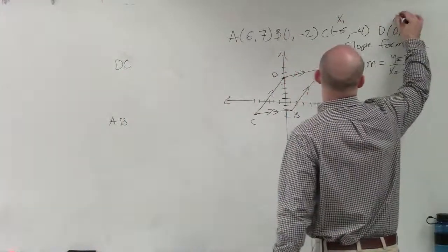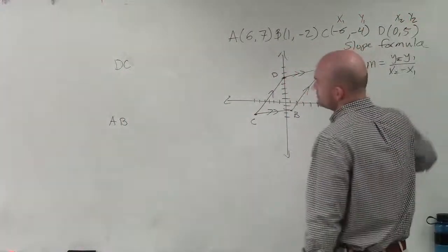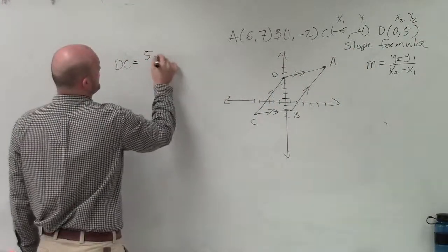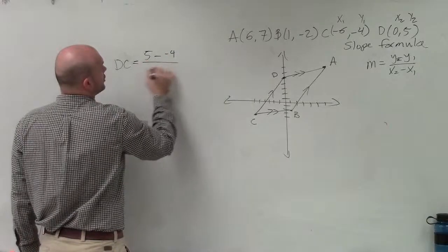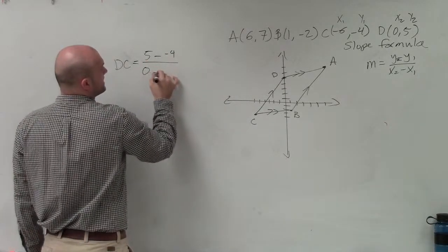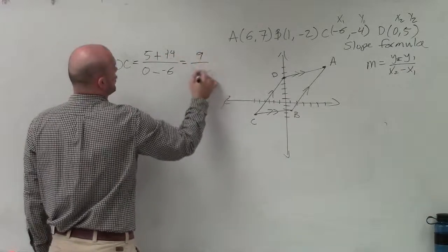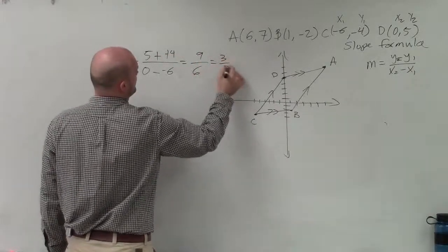So I just label them x1, x2, y1, y2. So I have 5 minus negative 4 all over 0 minus negative 6. 5 minus negative 4 becomes 9 over 6, which equals 3 halves.